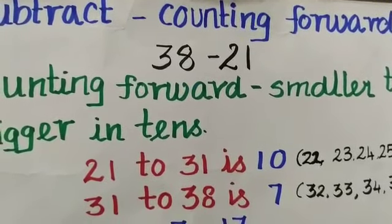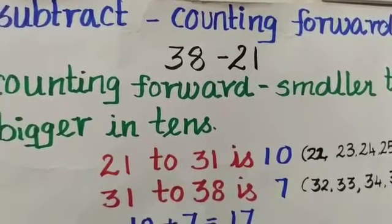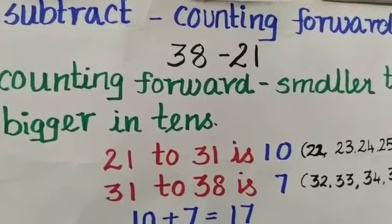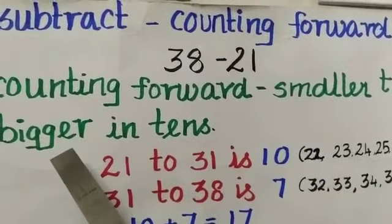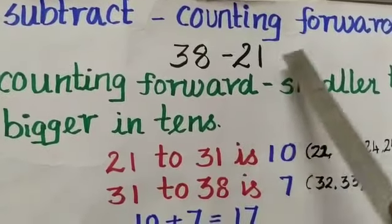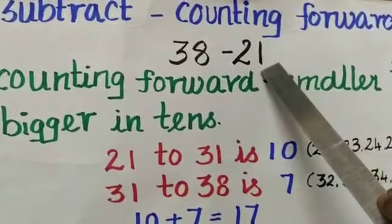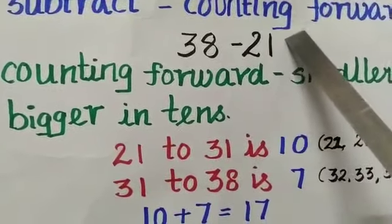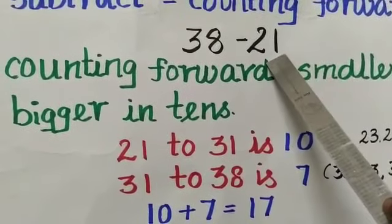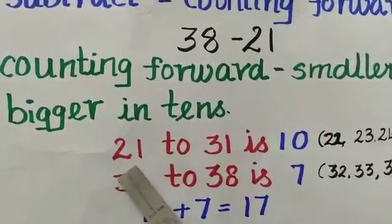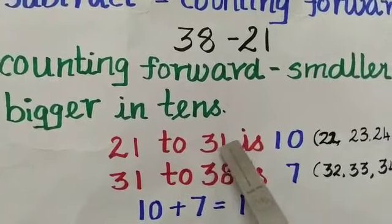In counting forward method we will count forward from smaller number to the bigger number in tens. The question is 38 minus 21. The smaller number is 21, so start with 21. 21 to the next tens is 31.